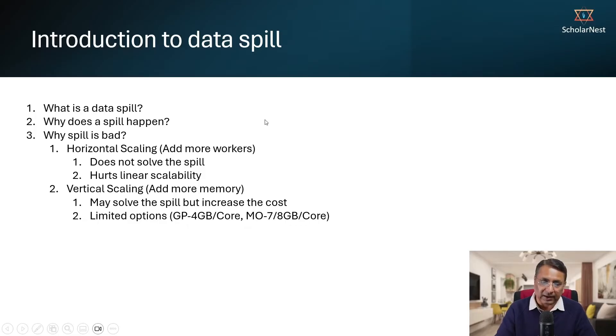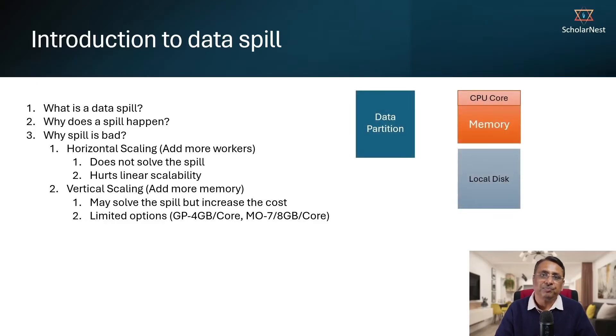So let's try to understand what is data spill. I hope you already understand how Spark processes data. In Spark, each data partition is processed by one single CPU core. And that CPU core is also given some memory for doing the data processing or for processing the data partition. That CPU core can also access a local disk of the executor just in case if it is required.